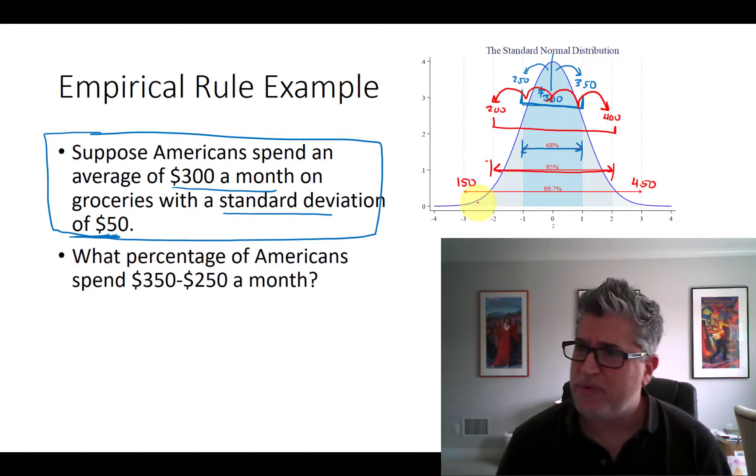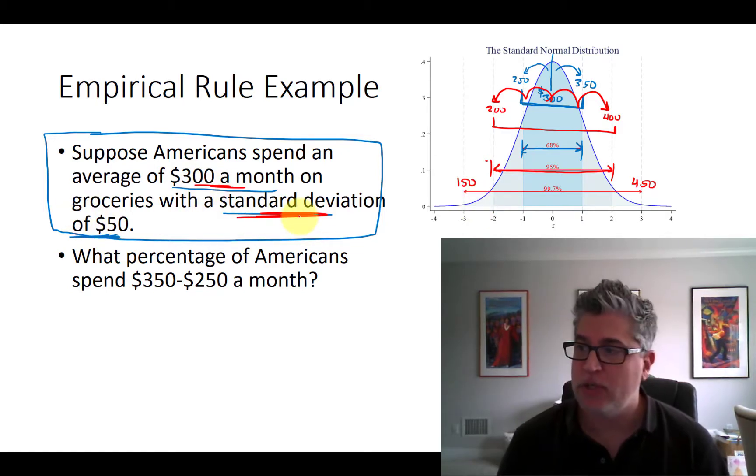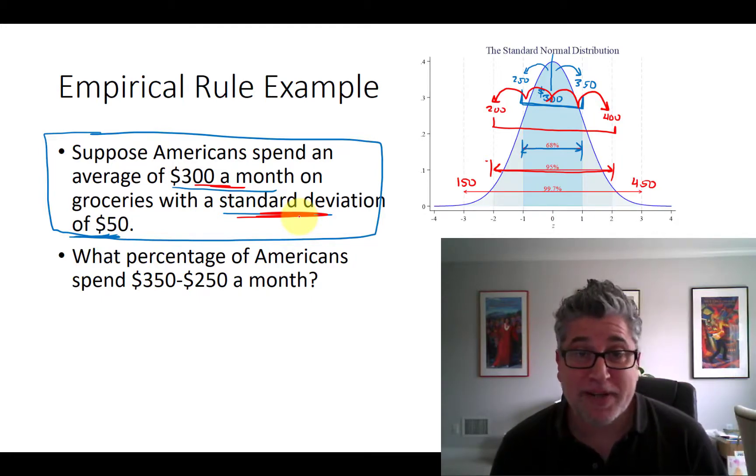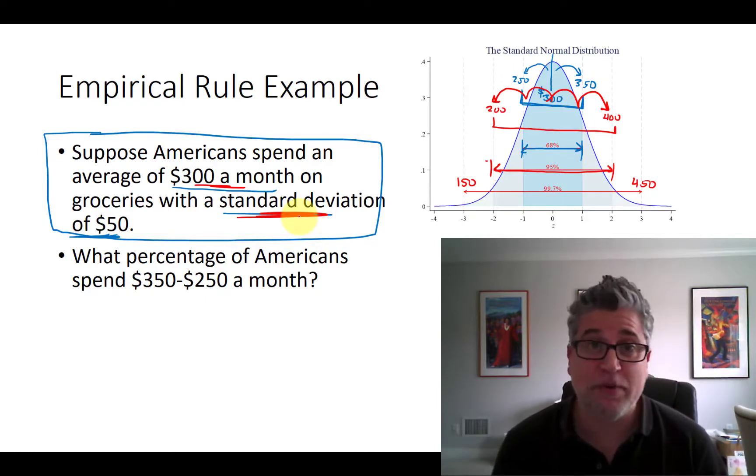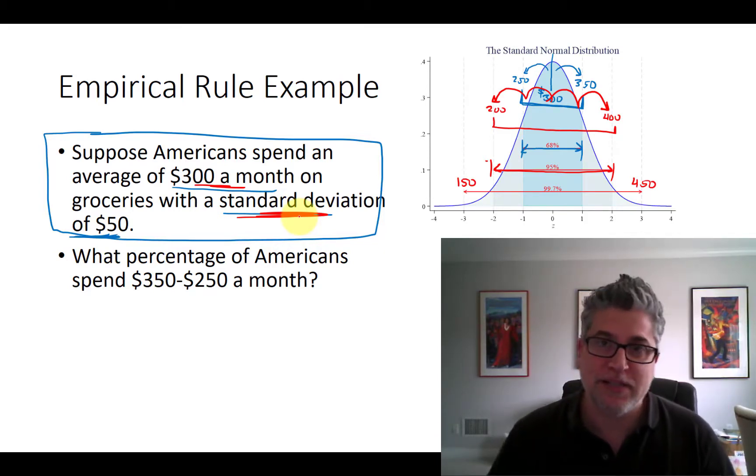So this is incredibly powerful stuff. Just knowing the mean and the standard deviation told us what roughly two-thirds of Americans, what 95% of Americans, and pretty much 100% of Americans spend on groceries. It gave us a very great description of the dispersion of grocery shopping in the United States, all from knowing what the average and the standard deviation is.